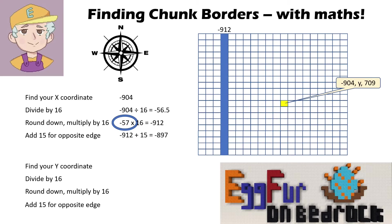To get the second chunk border, just add 15 onto that. You probably don't need to do that — finding one corner is enough — but if you want to get all of your borders sorted out, add 15 and that'll give you minus 897. So that's our second edge.